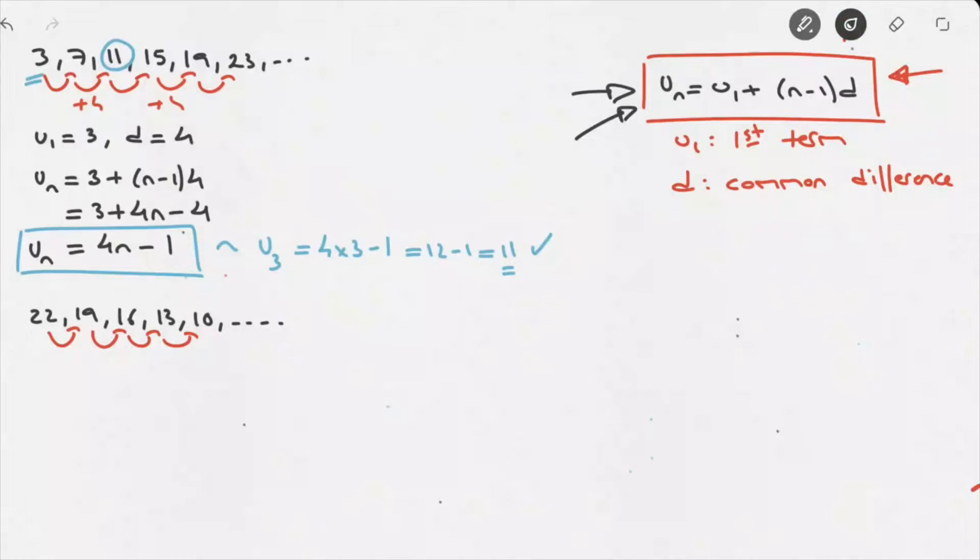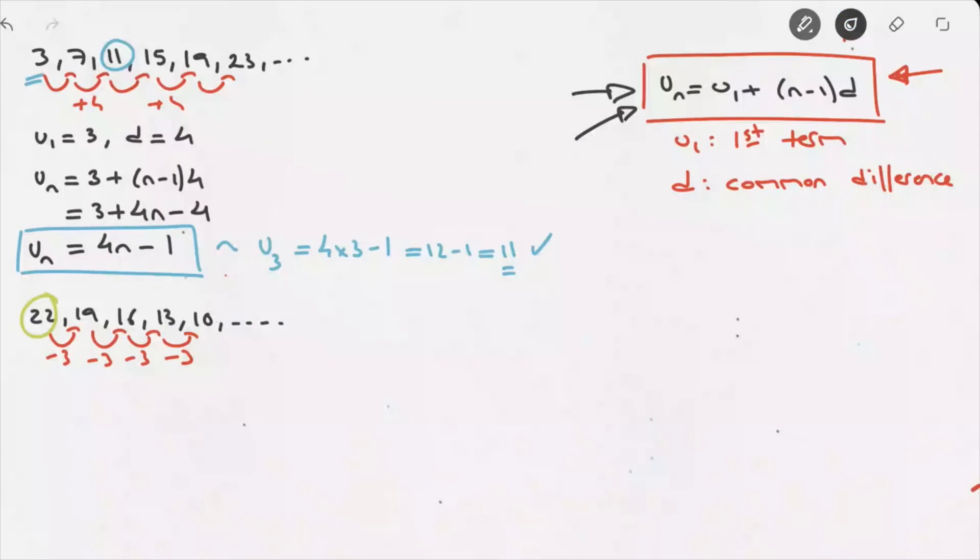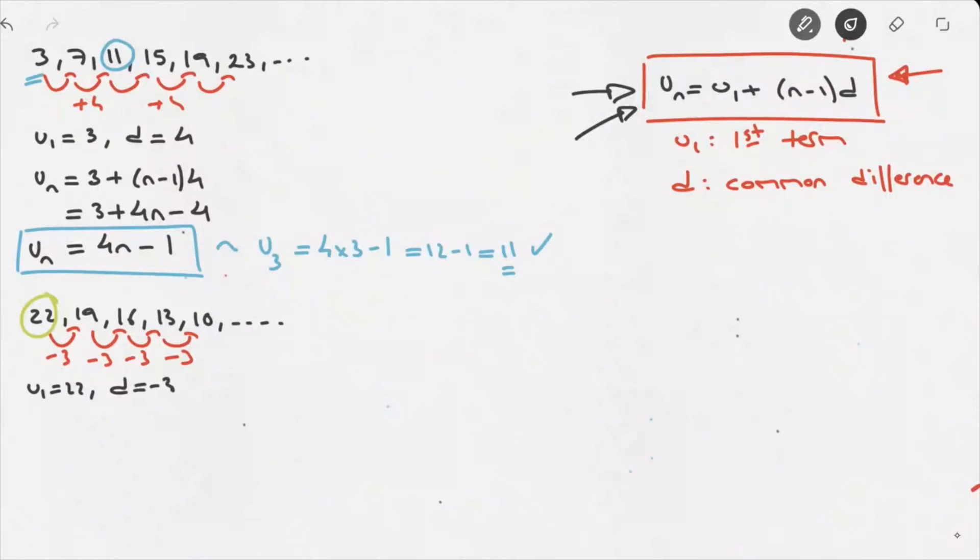We need the first term and the common difference. Well, looking at this sequence here, we can see that the first term is 22. And the amount we're subtracting to get from one term to the next is always 3. So, this sequence's common difference is negative 3. So, let's just write those two things down. u_1 equals 22. And the common difference, d, is equal to negative 3.